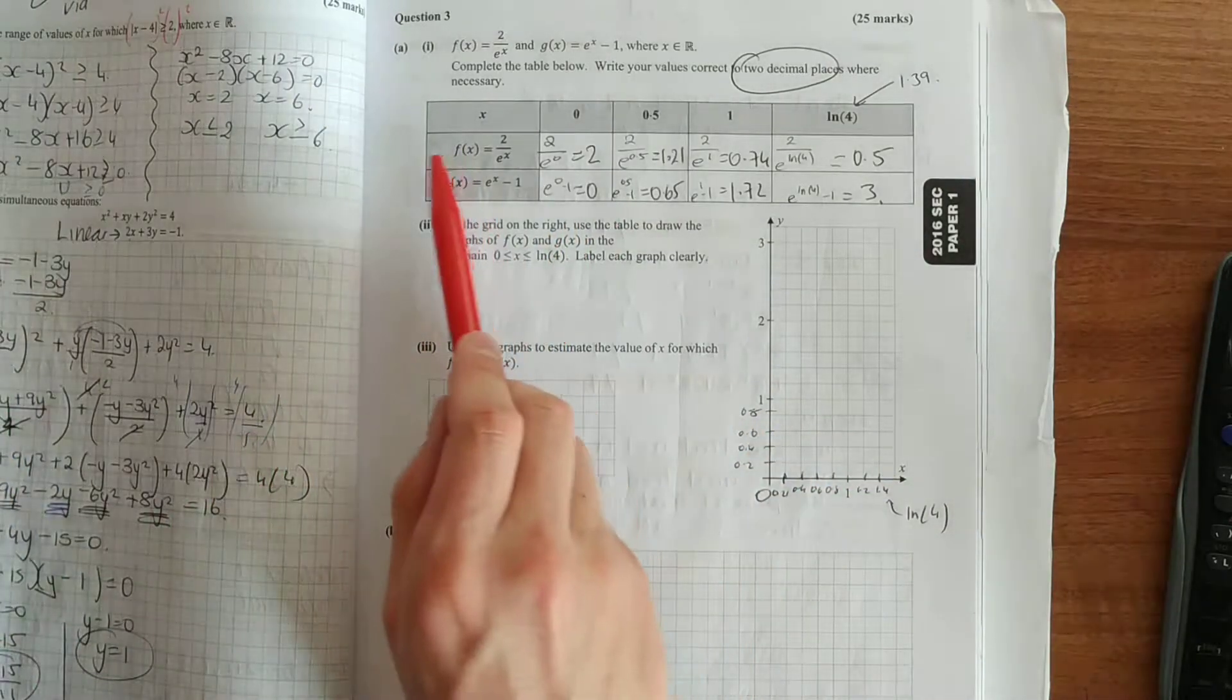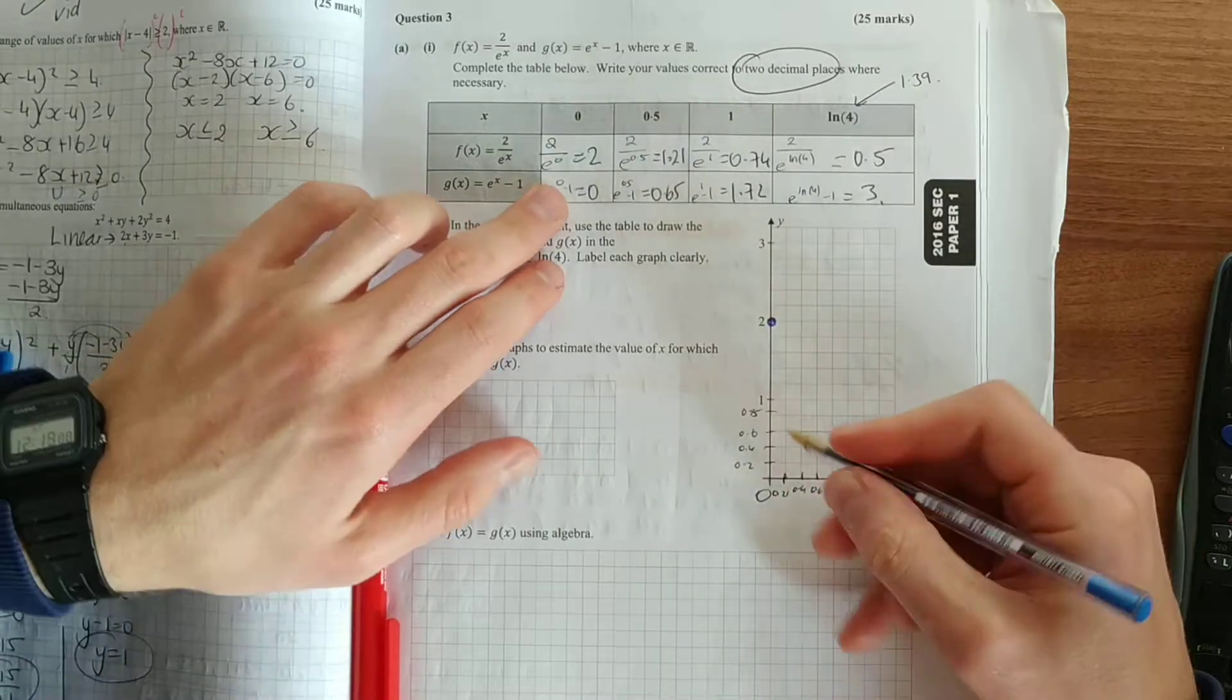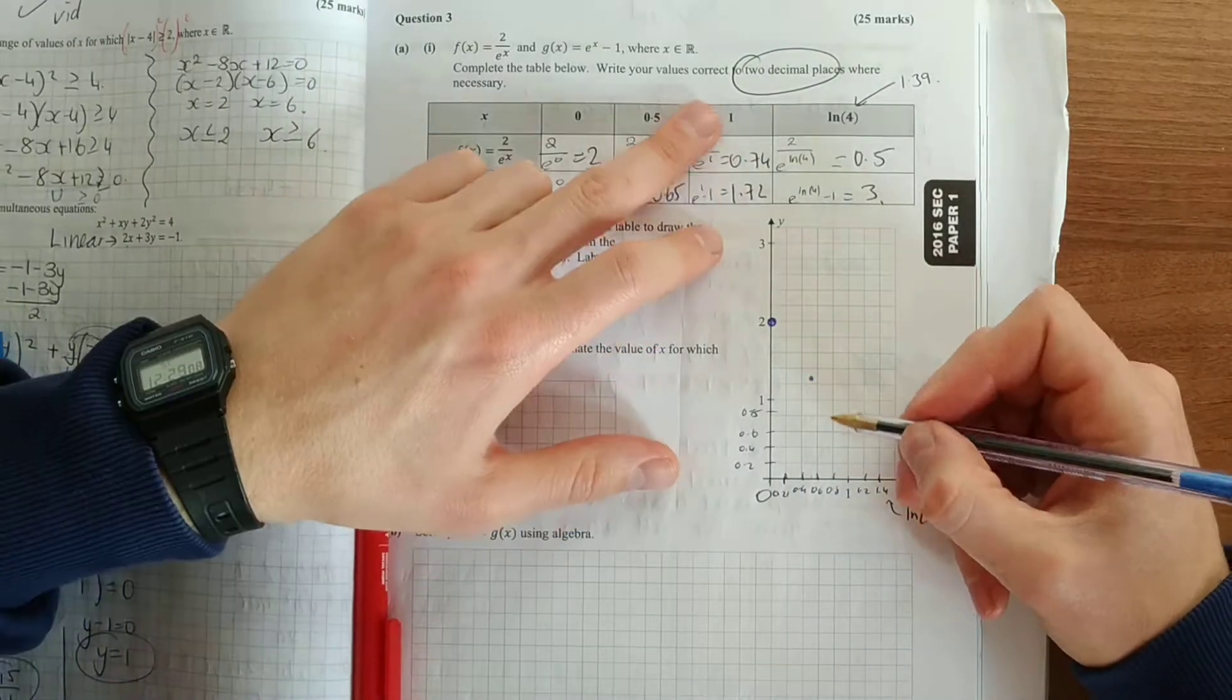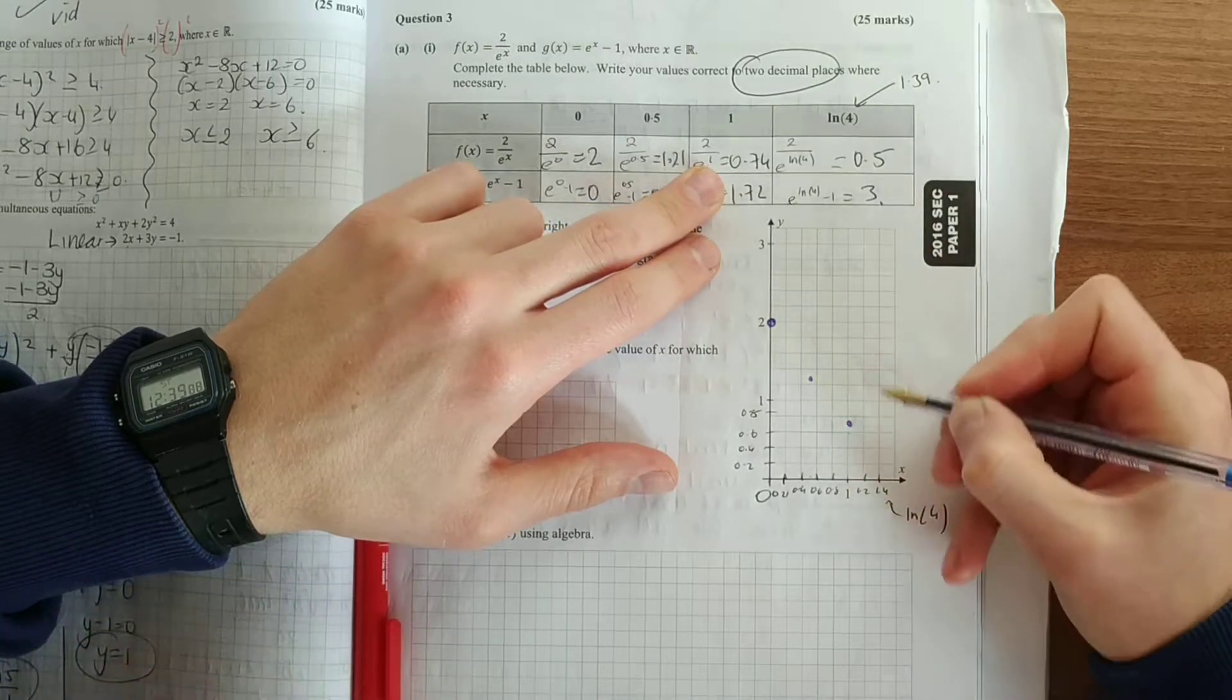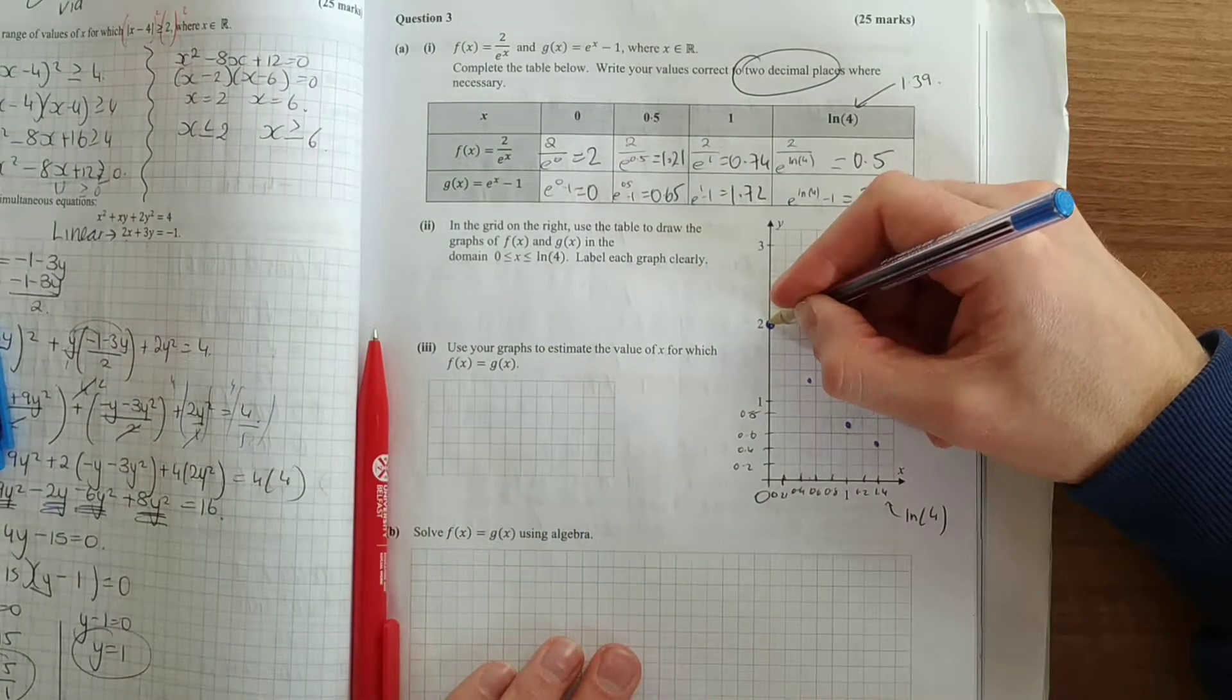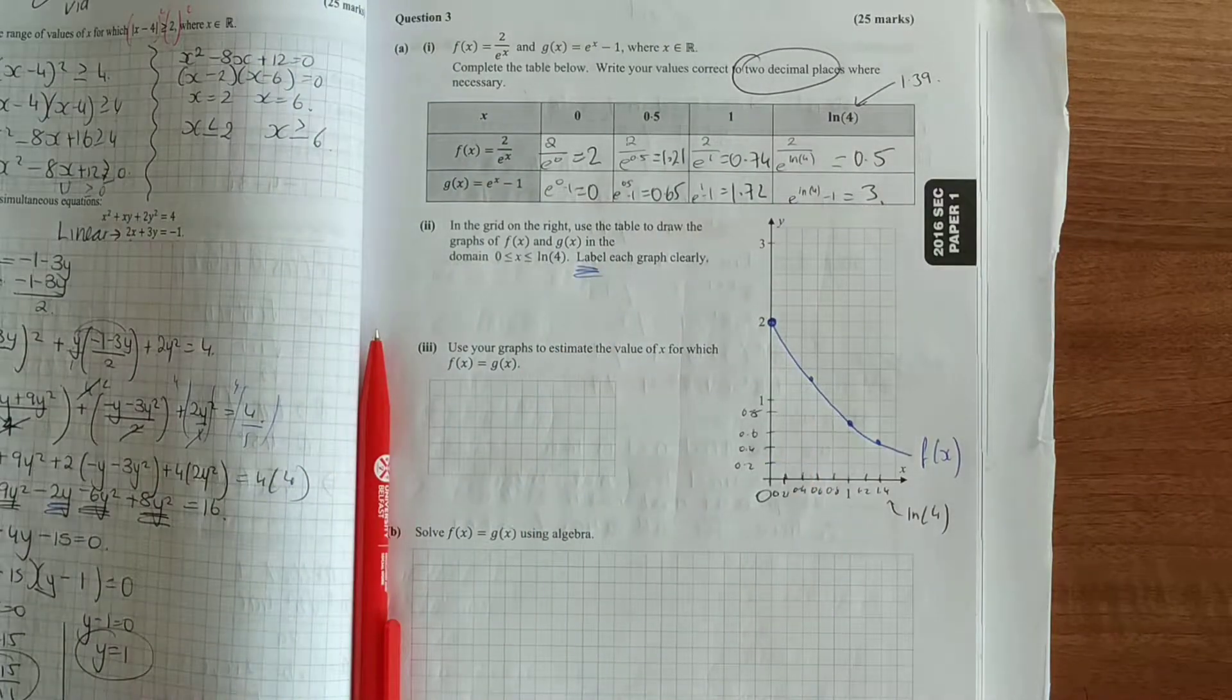Draw the graphs of f of x and g of x. So I'll do this f of x in blue pen. So our first value is 0, and our y-value is 2. Next one's 0.5, so halfway between 0.4 and 0.6, and we're going to 1.21. Next value of 1, we're going to 0.74. And then ln of 4, which is 1.39, we're going to have a value of a half. And join that up. Now smooth curve here, it's an exponential function. So that's our f of x. And it says label each graph clearly, so you would have to label them.